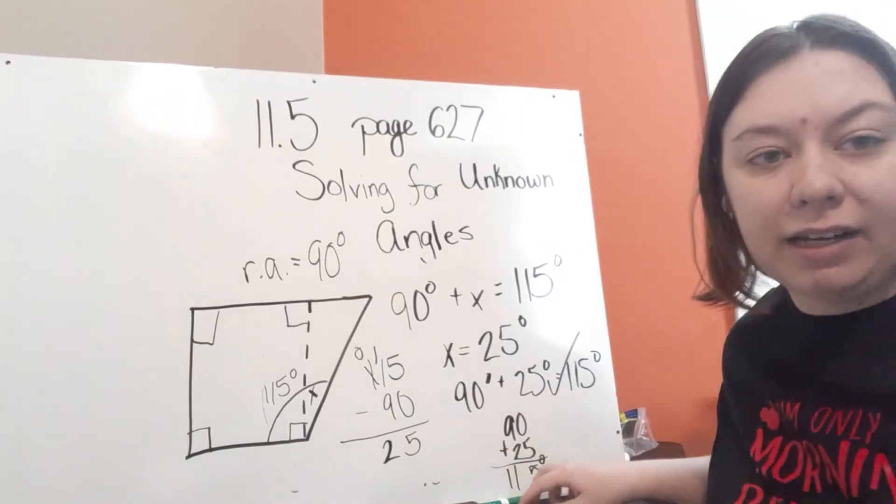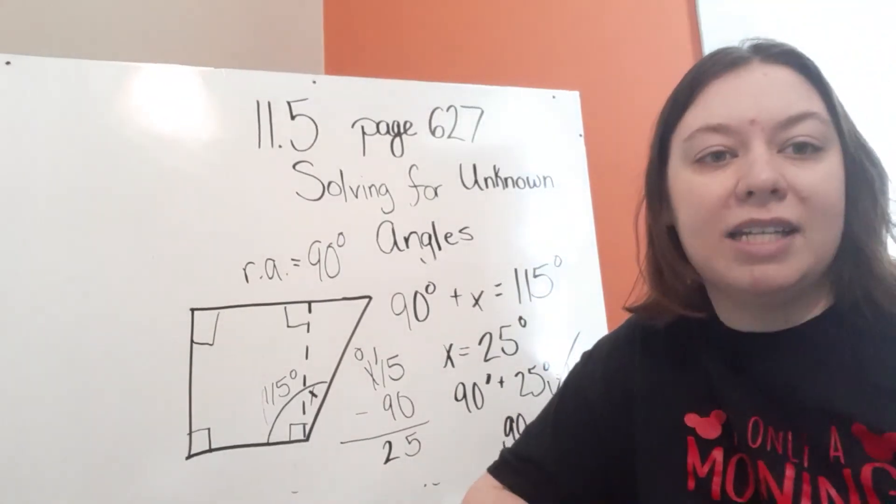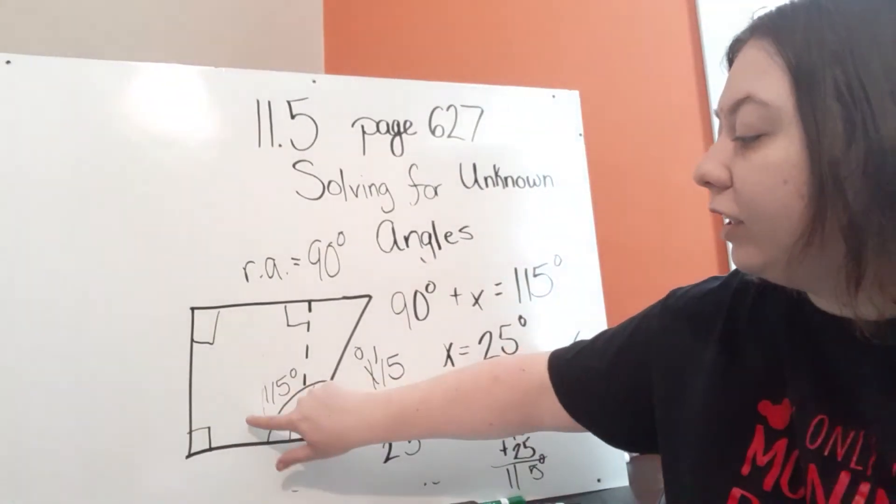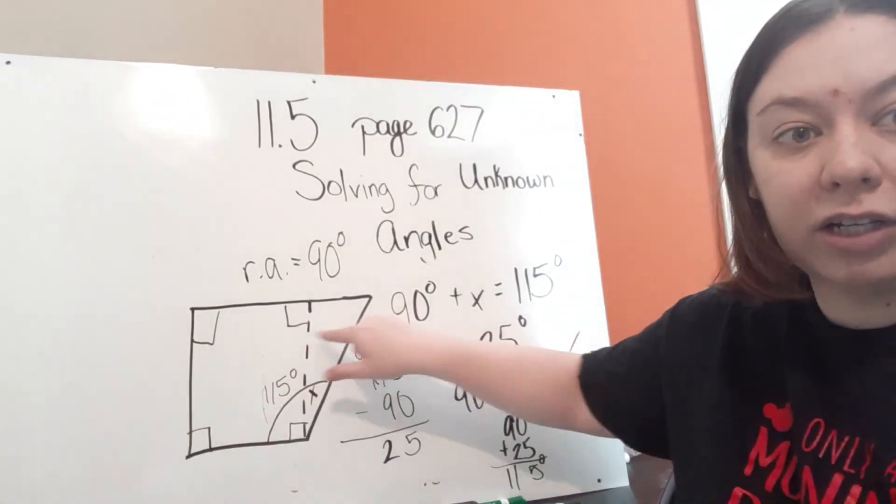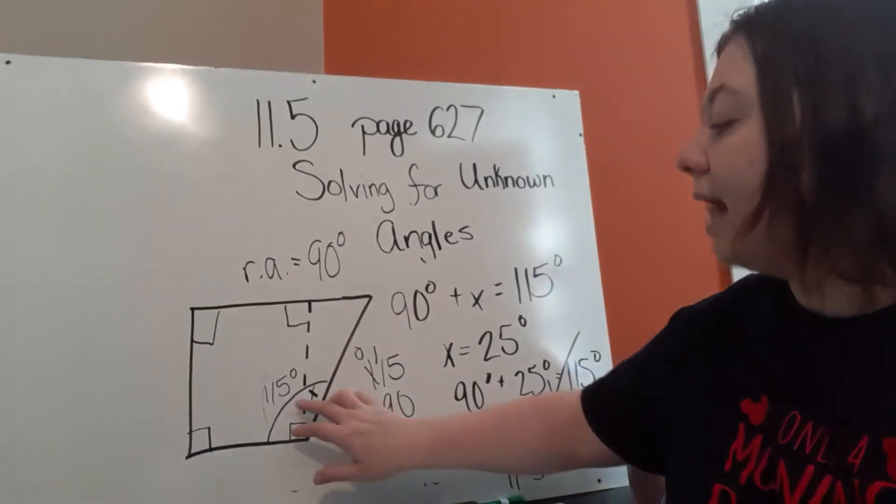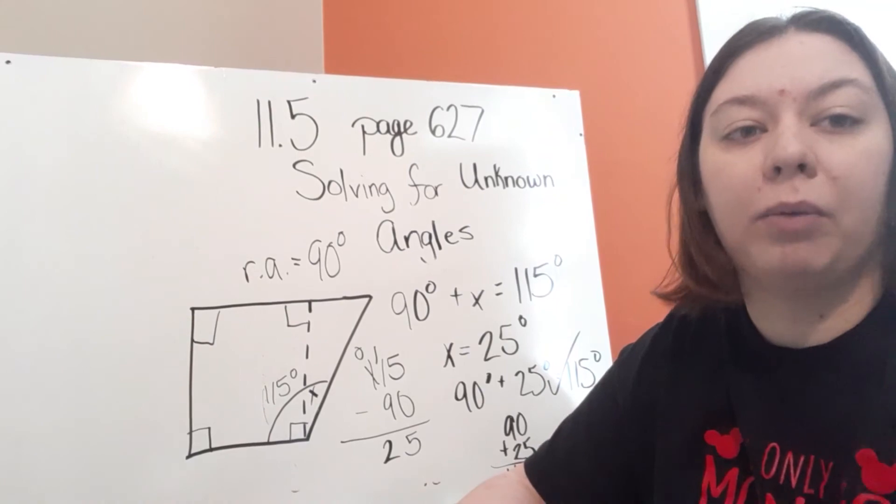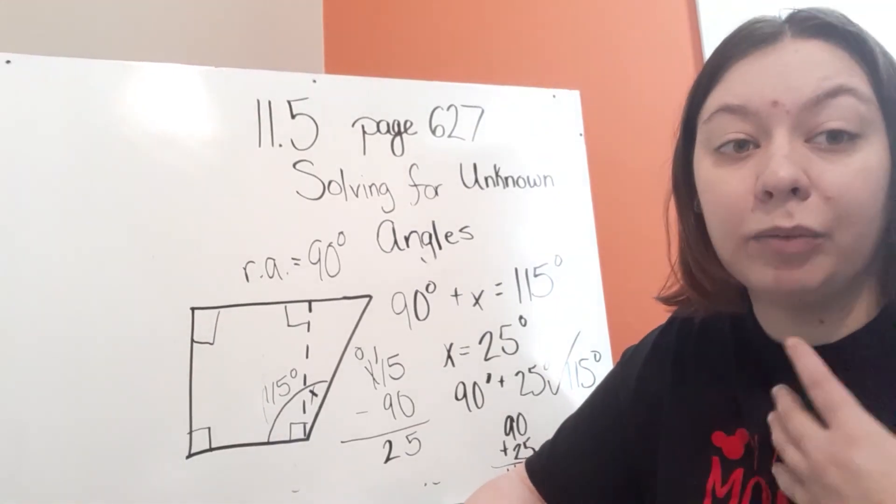For this lesson, I know that some of you guys might overthink it. But just remember, they are giving you the whole. They're giving you the whole angle. And then they want you to figure out the measurement of the smaller ones. And they're already giving you one part.